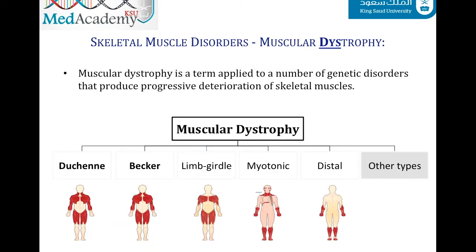Moving to muscular dystrophy — a term applied to a number of genetic disorders that produce progressive deterioration of skeletal muscles. These disorders differ in both morphological and clinical features. The most common forms are Duchenne muscular dystrophy and Becker muscular dystrophy.